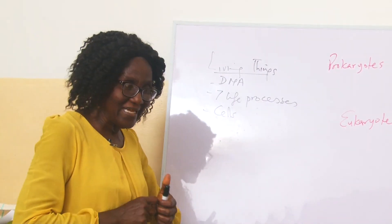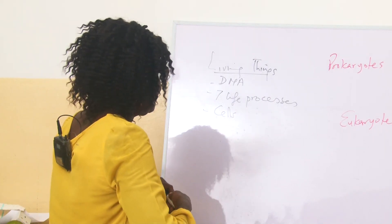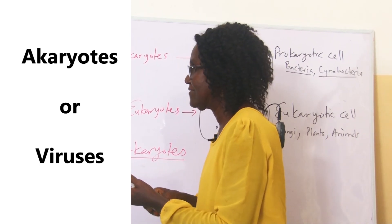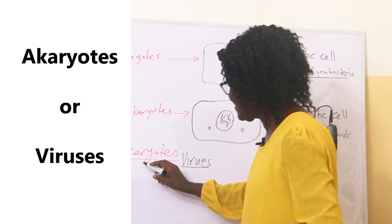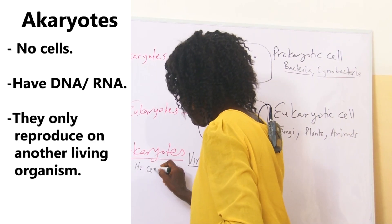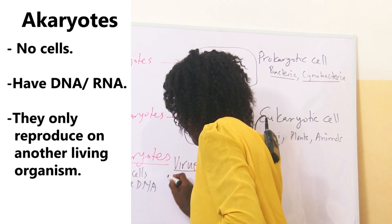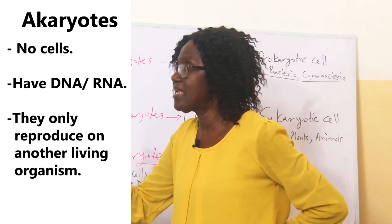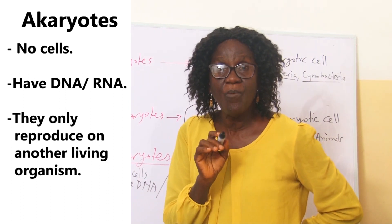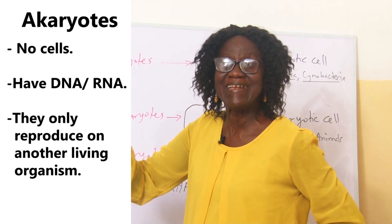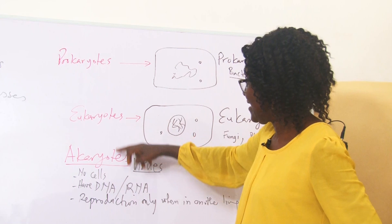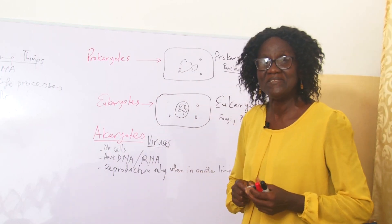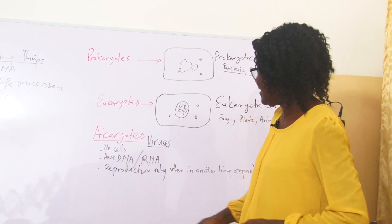There is also another category called acaryotes. Acaryotes are viruses. These viruses have no cells. They have DNA or RNA. They do not perform all the life processes — they only perform reproduction when they are on another living thing. Viruses are not counted as living things, and they are also not counted as non-living things. They are acaryotes.